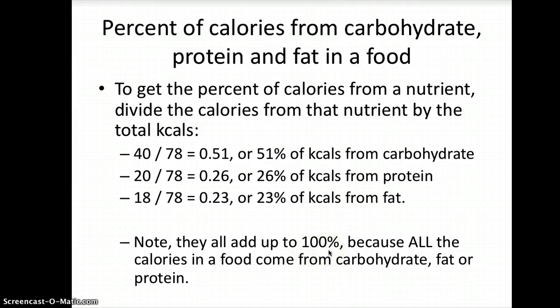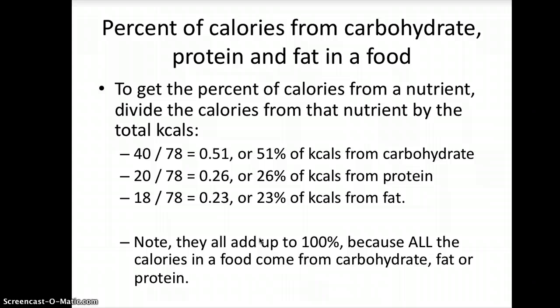Notice that they all add up to 100, because all of the calories in a food come from carbohydrate, fat, or protein. If there's some alcohol in there, there would be something for that as well. But that's a way you can double-check your work — make sure all your percentages add up to 100%. The point here is to look at a food and ask: do most of the calories come from carbohydrate and protein, or do most come from fat? This is a way to determine that.